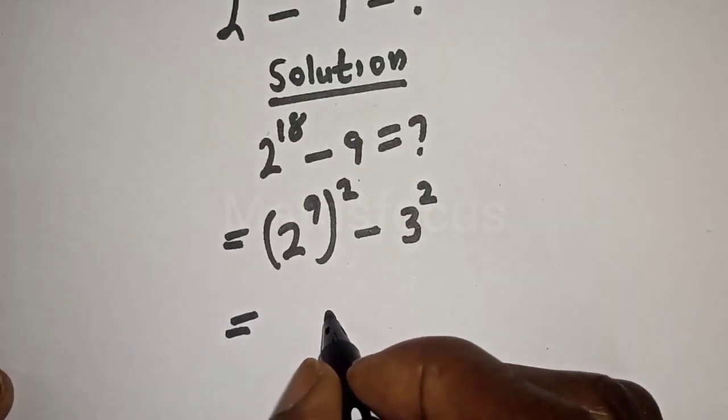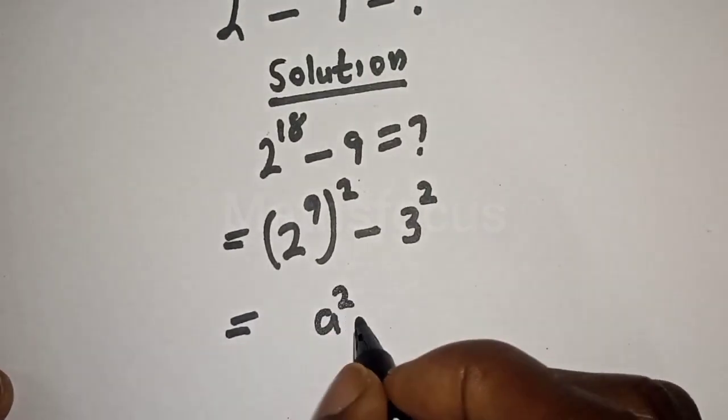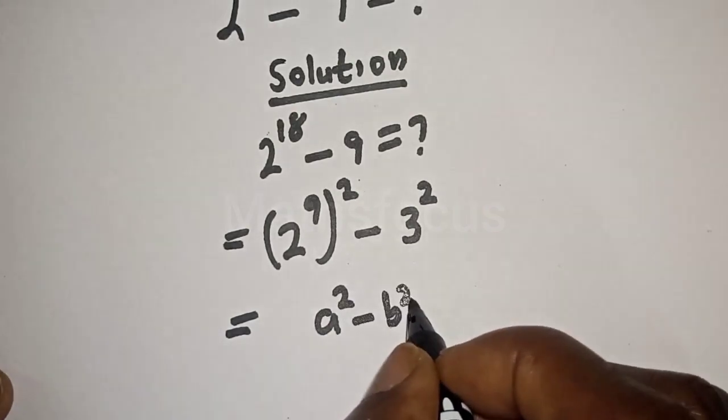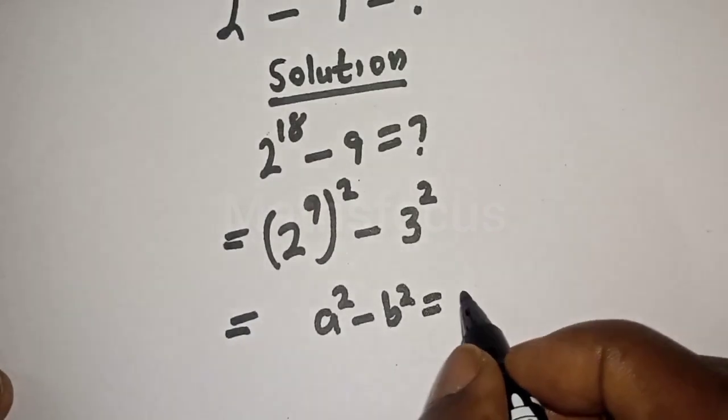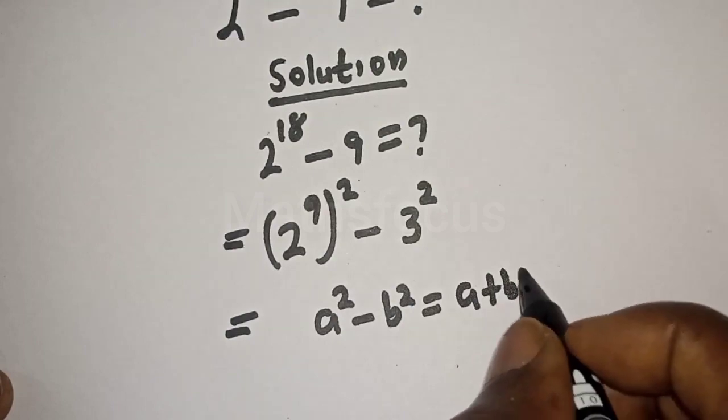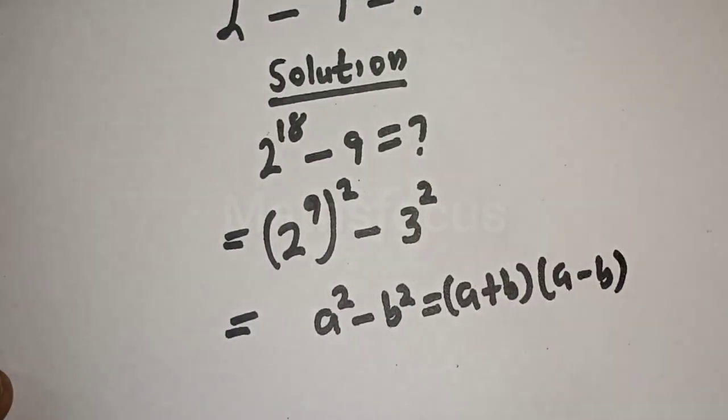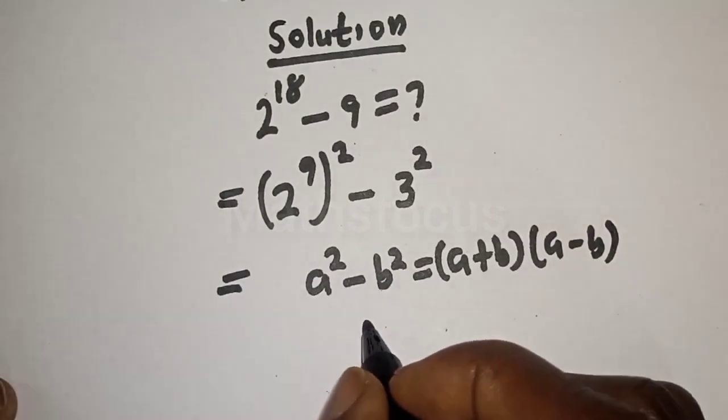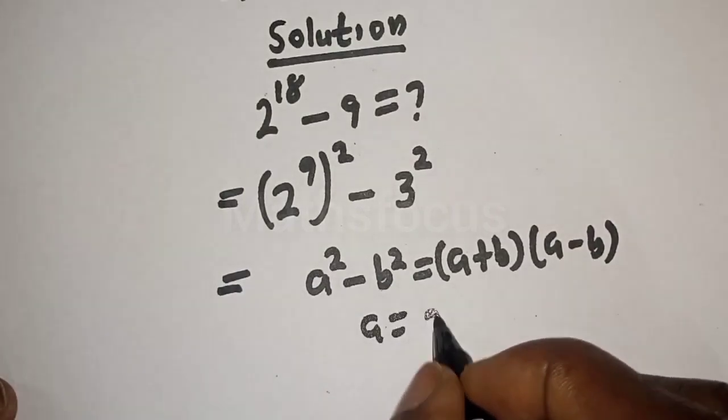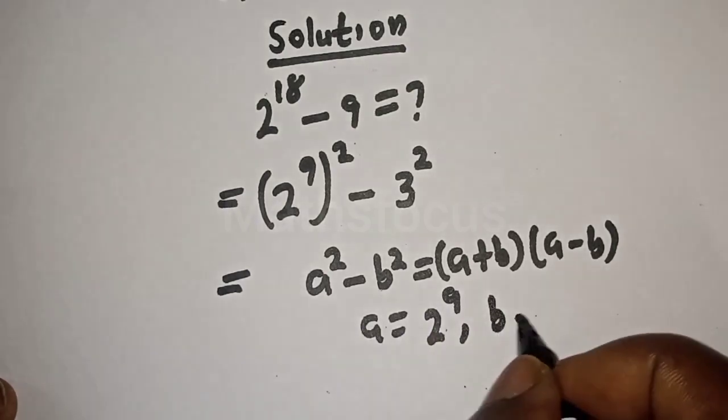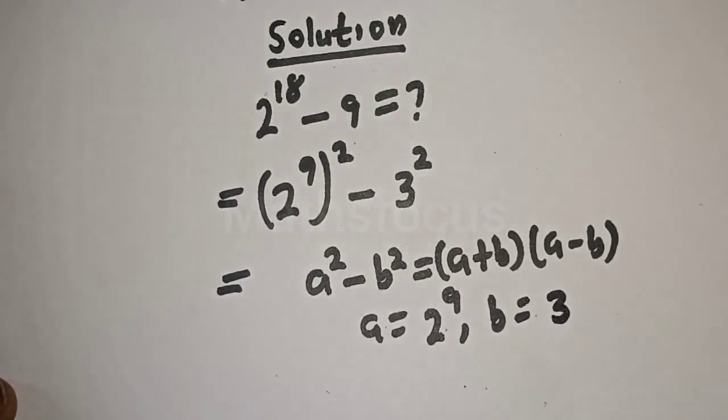This is equal to, take note of this rule: if you have a squared minus b squared, this is equal to a plus b bracket a minus b, where a is equal to 2 raised to power 9 and b is equal to 3.